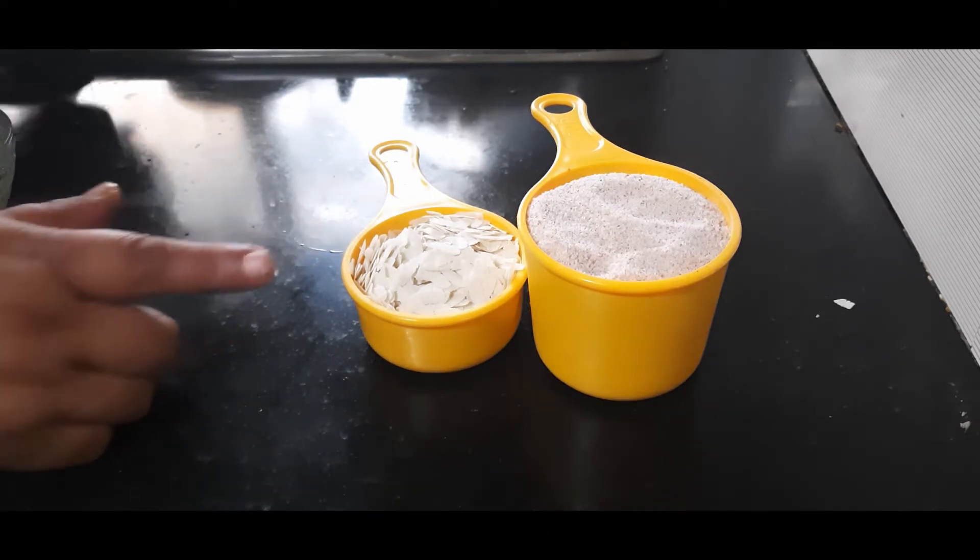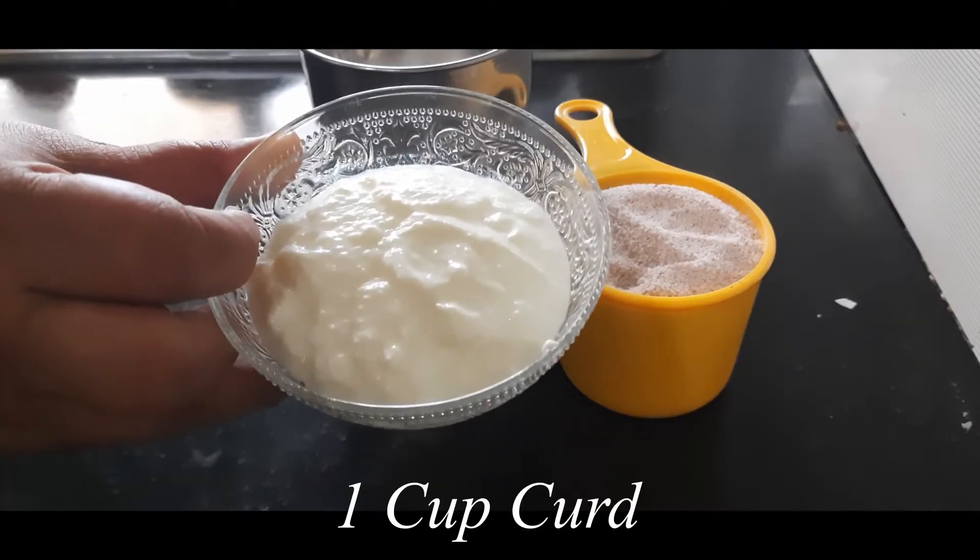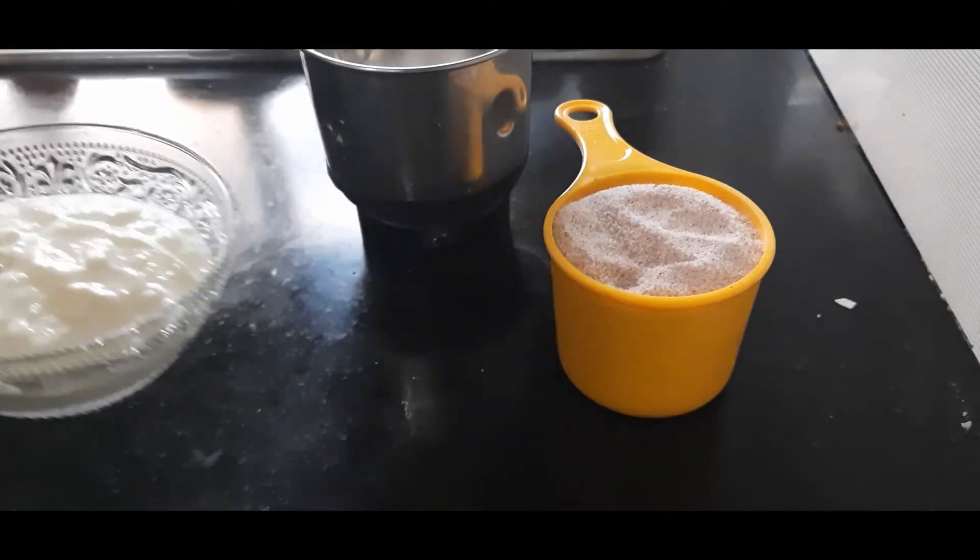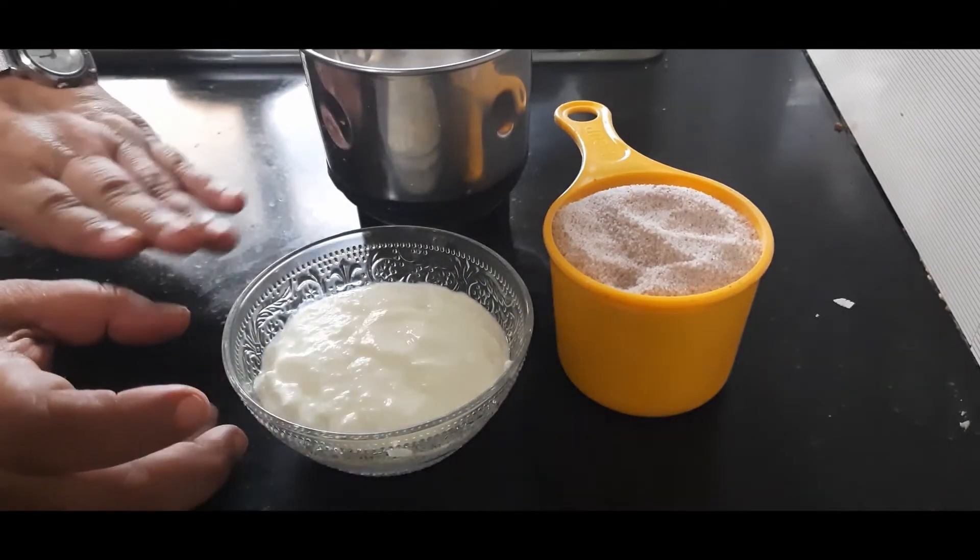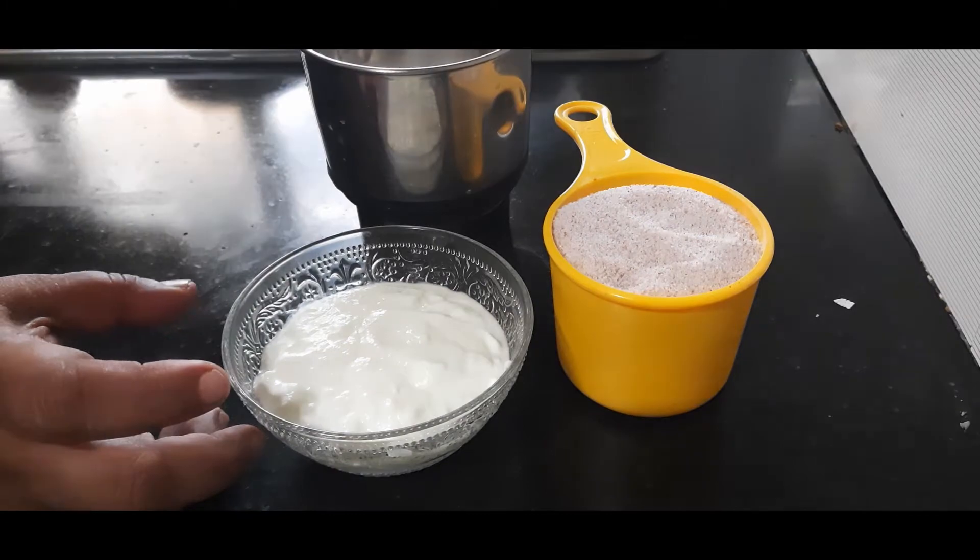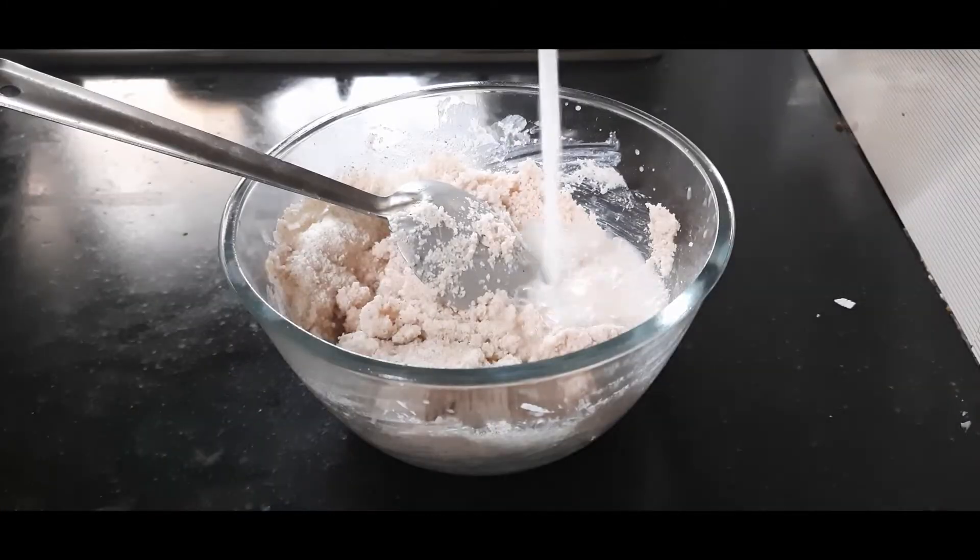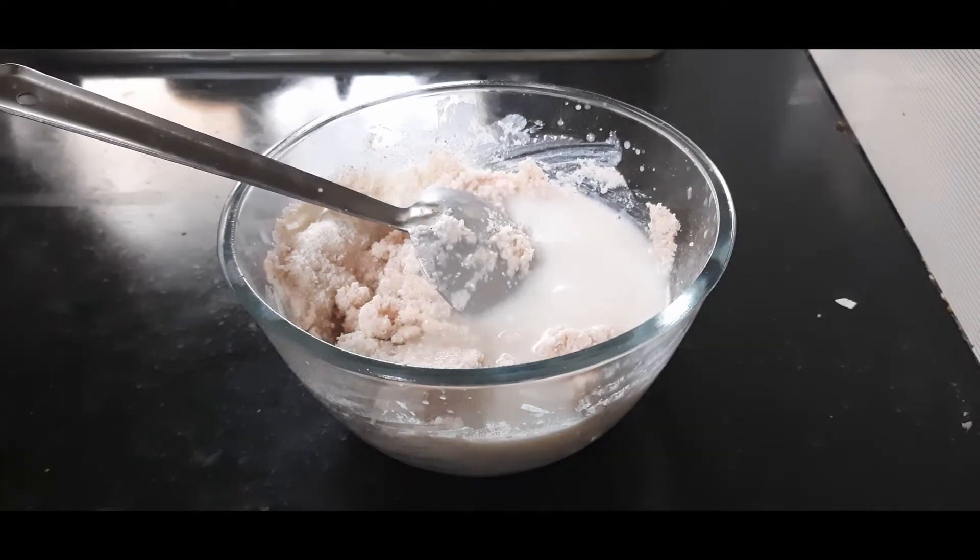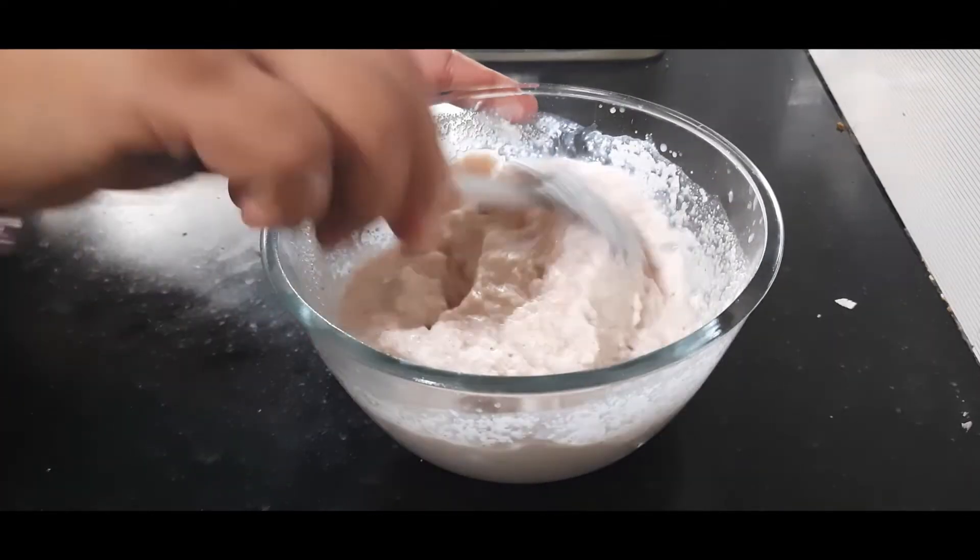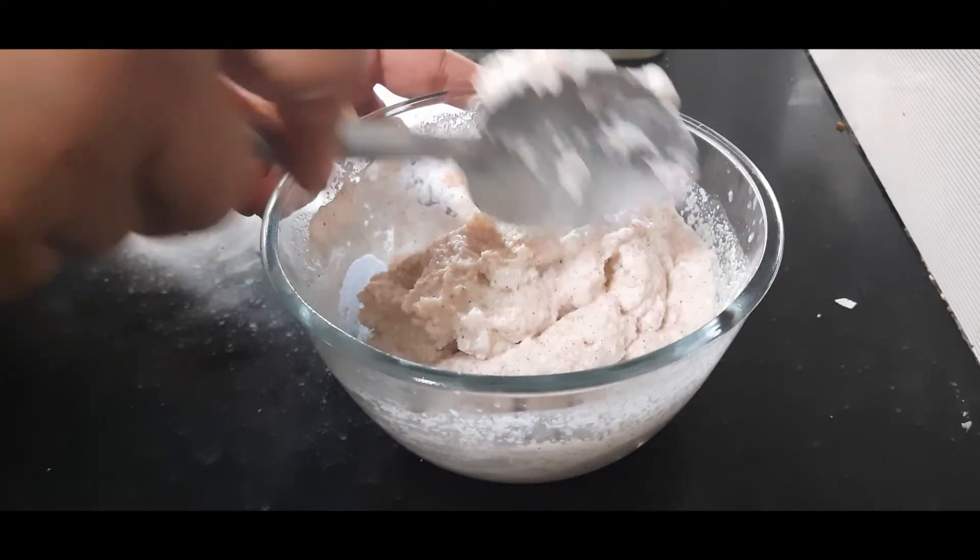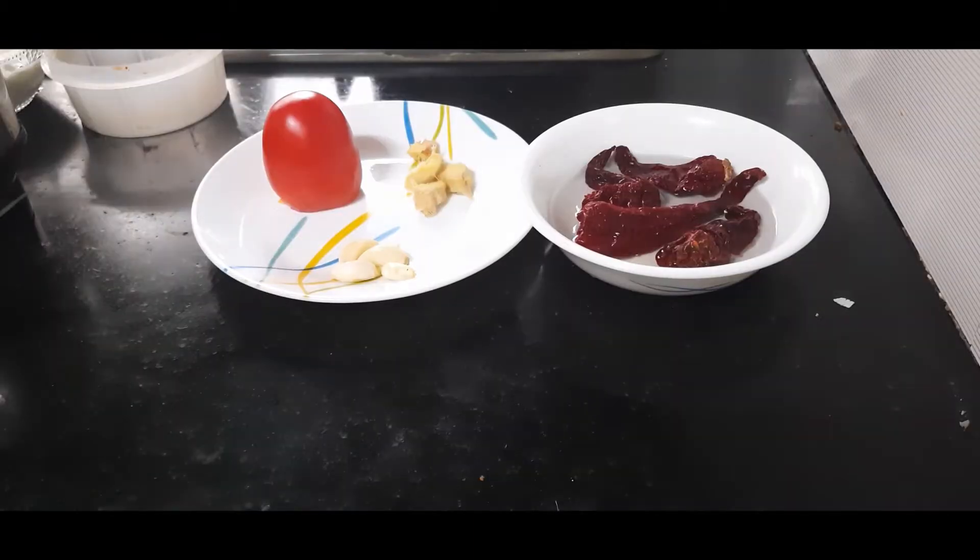Now first I will grind the beaten rice into a mixy jar. So this is ready. Also, I have one cup of curd here. Now I'll mix everything—all the three: the idli rava, the ground poha, and the curd into a mixing bowl. Mix everything well. Add some water. I'm adding about half a cup of water. I'll need some more water. This is perfect. Now I'll set it aside for 15 minutes so that it gets well soaked.